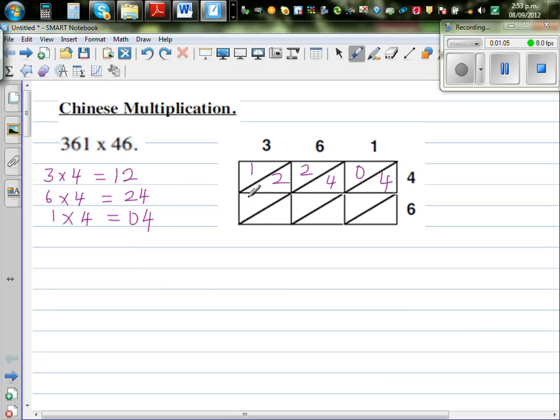Now 3 times 6 is 18. Then you've got 6 times 6, which is 36. Be careful. And then you've got this grid for 1 and 6. So 1 times 6 is 6, but I'm going to write 06.